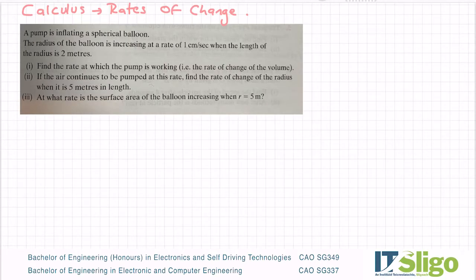A rates of change calculus question as requested by a student. A pump is inflating a spherical balloon. The radius of the balloon is increasing at a rate of one centimeter per second when the length of the radius is two meters. Part one: find the rate at which the pump is working, i.e. the rate of change of the volume. Part two: if the air continues to be pumped at this rate, find the rate of change of the radius when it is five meters in length. Part three: at what rate is the surface area of the balloon increasing when r is five meters.